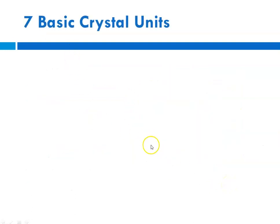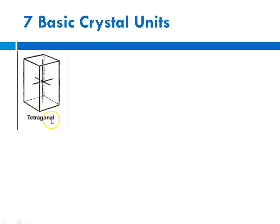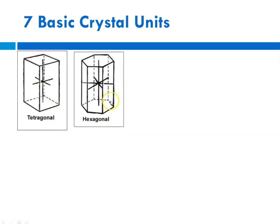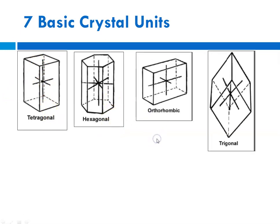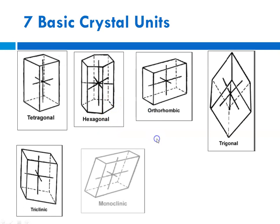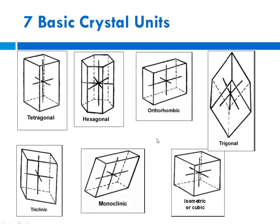There are seven basic crystal units. We just hold you responsible for the fact that you know there are seven basic shapes of crystal particles. You do not have to memorize these. We talk about a tetragonal shape, the unit cell being hexagonal, orthorhombic, trigonal, triclinic, monoclinic, and isometric or cubic. When I showed you sodium chloride and lithium chloride, those were more cubic structures.